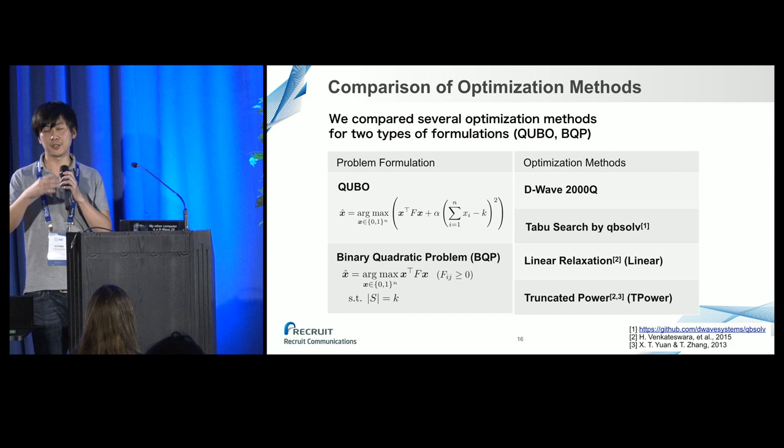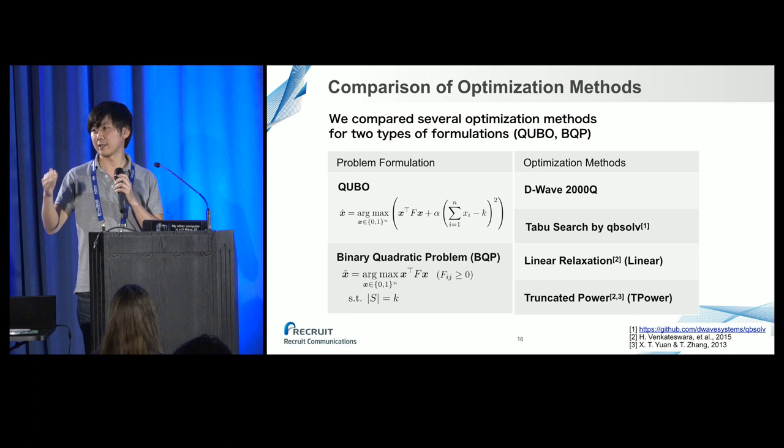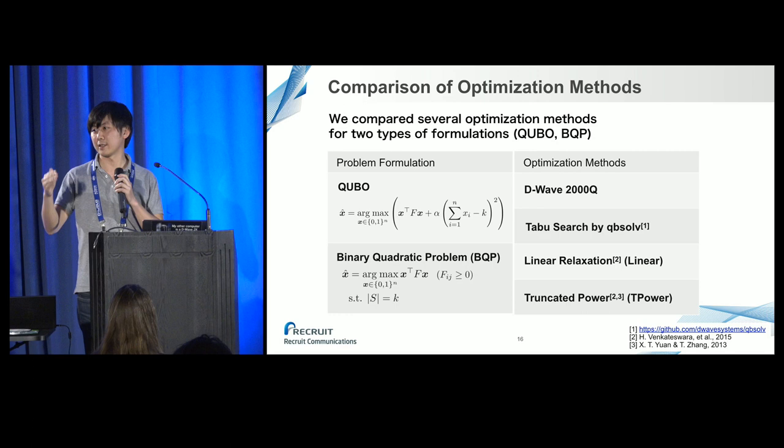Audience: I have a question regarding the precision of your problem. You have a hard constraint with the parameter alpha. How do you deal with the decision of what alpha to choose, and how does this potentially affect the problem? Speaker: For the QUBO formulation we have parameter alpha, so we increase alpha from an initial value. If alpha is small, the constraint is not satisfied, so we increase alpha step by step until the constraint is satisfied.